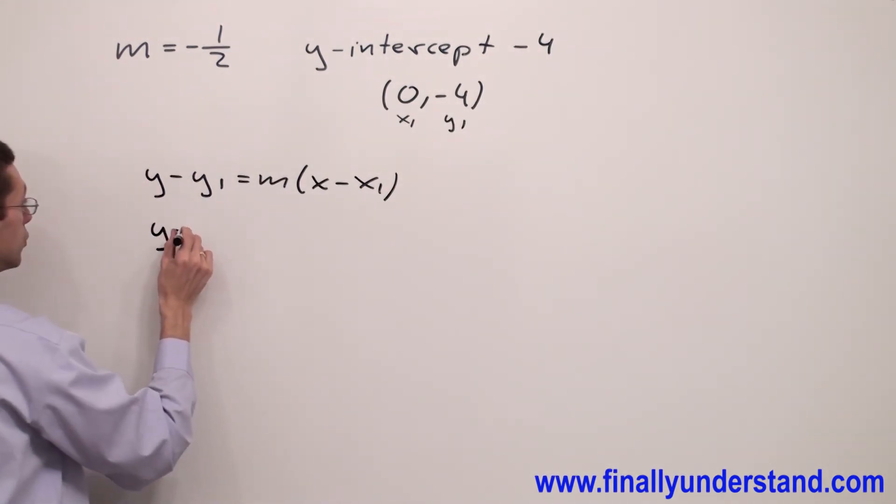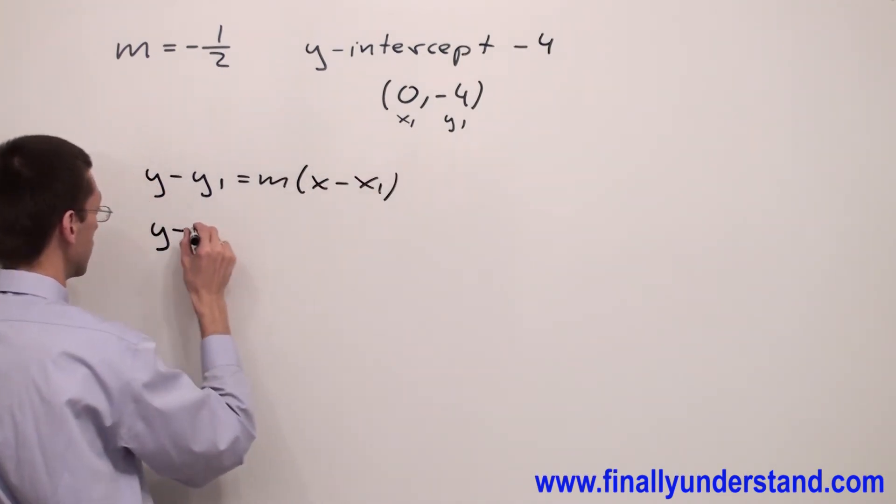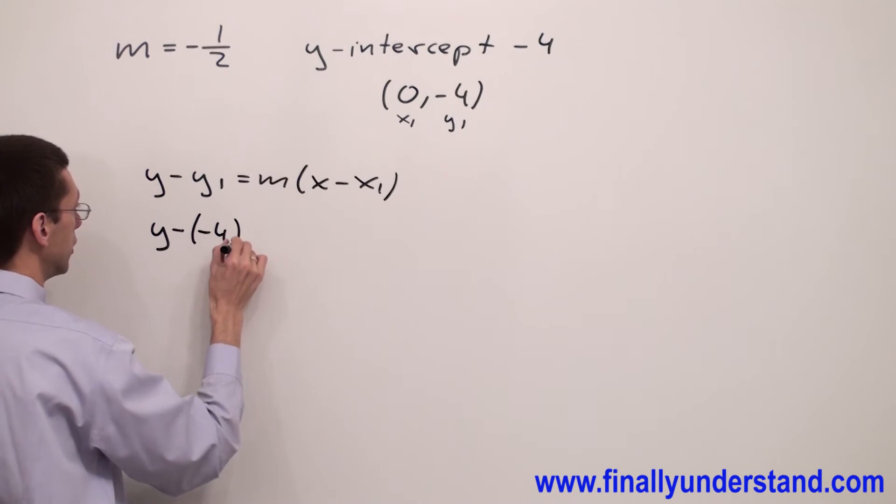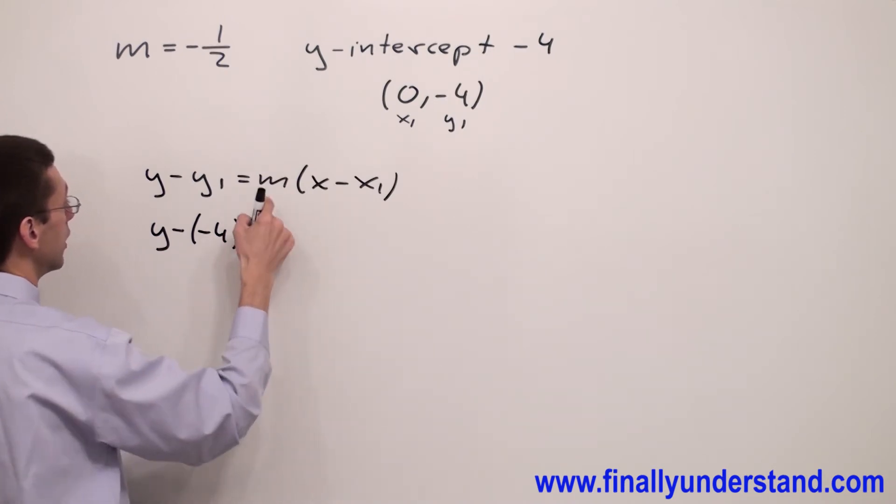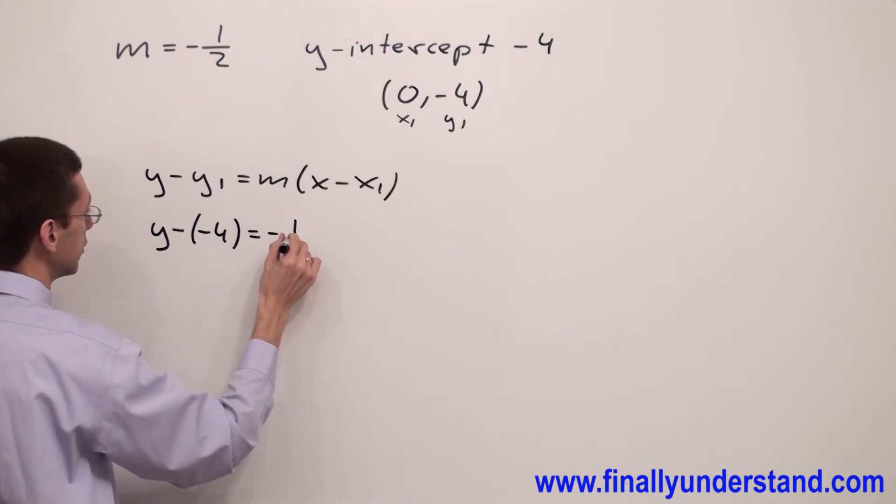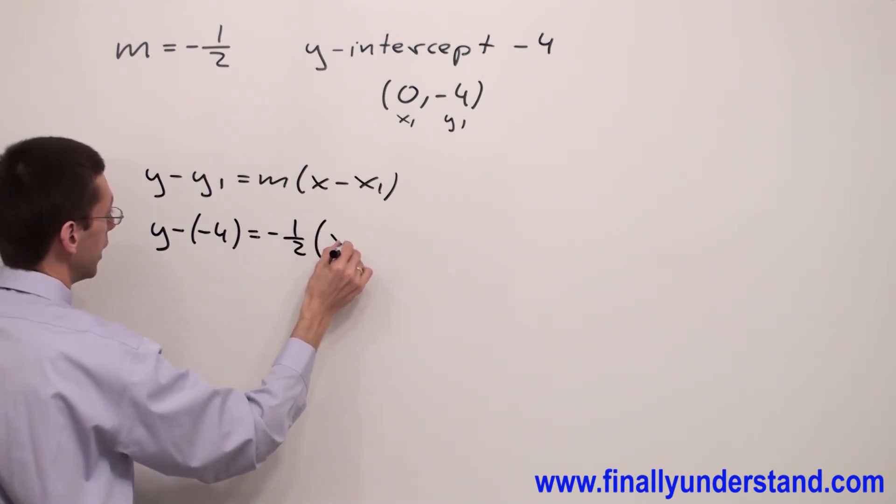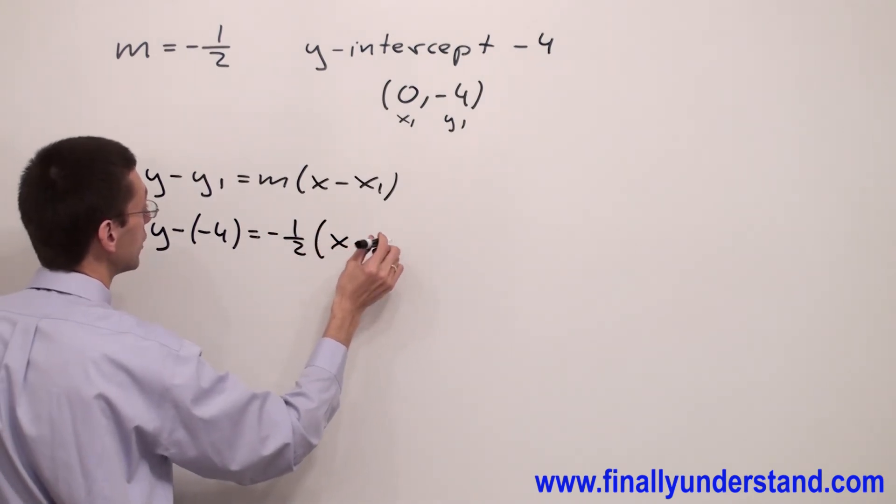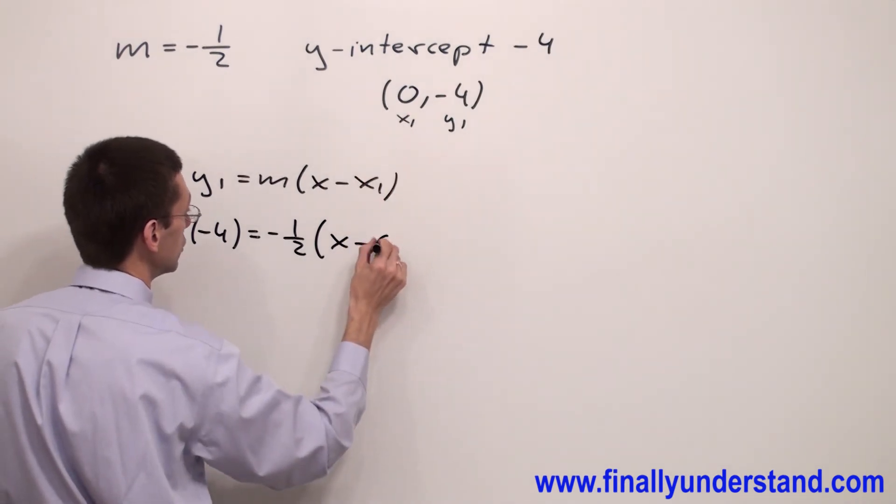Y minus y1 is equal negative four. I'm going to write negative four equals m, which is equal negative one half, times x minus x1, which is equal zero.